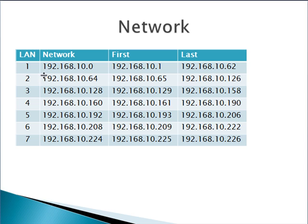So these are your networks. The first one is 192.168.10.0 — the first and last host addresses with anything in between being usable for the first network. The second network: 64 is your network address, 65 is your first usable, 126 is your last usable, and anything in between belongs to network 2.